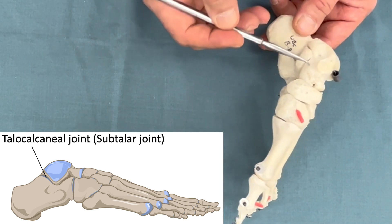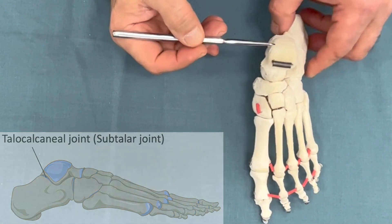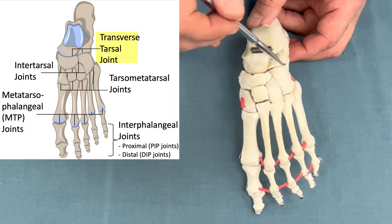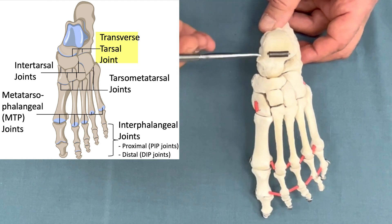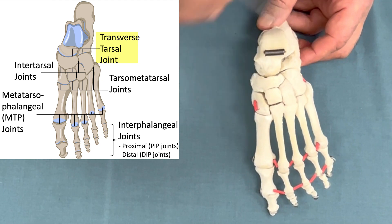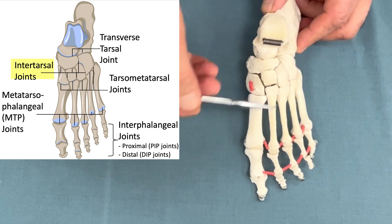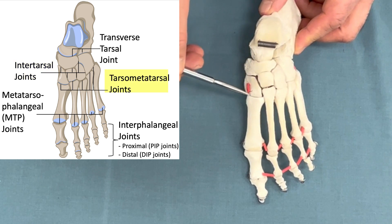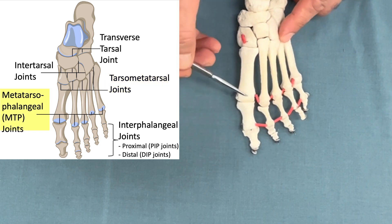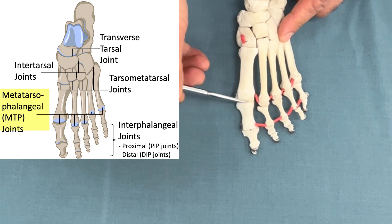The joint between the talus and calcaneus is called the talocalcaneal joint or subtalar joint, and it is a synovial planar joint. Then we have the transverse tarsal joint, between the talus and calcaneus on the proximal side and the navicular and cuboid on the distal side. The rest of the joints are intertarsal, and going further down we have the tarsometatarsal joints — also synovial planar joints.